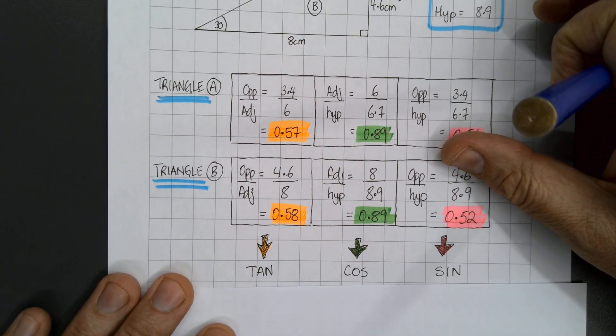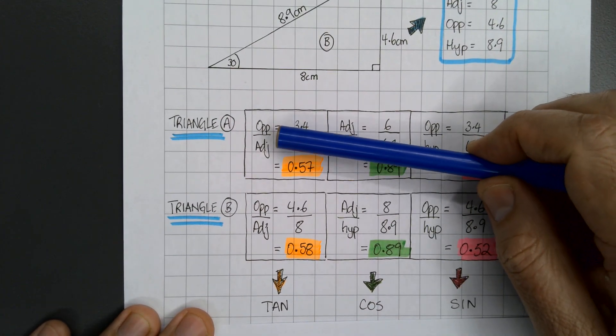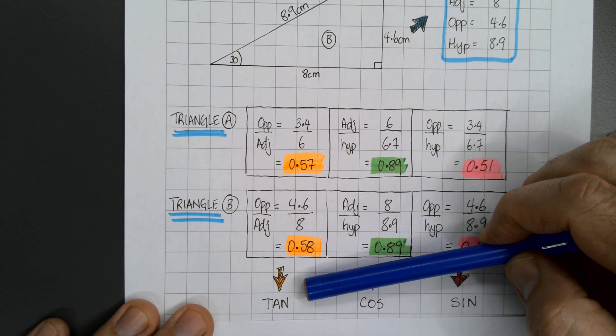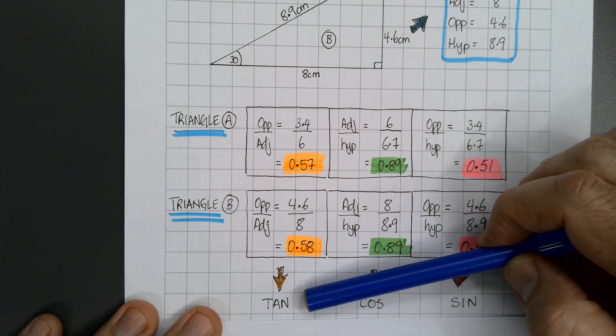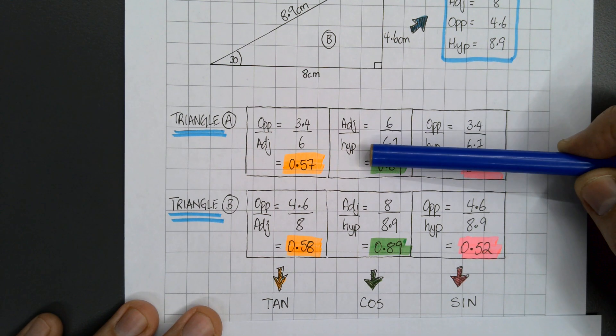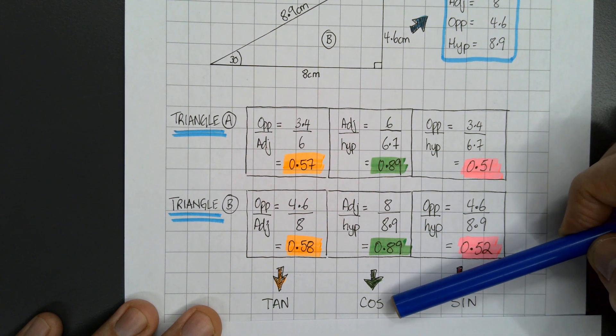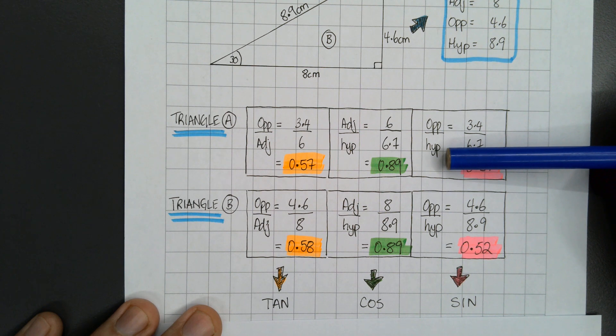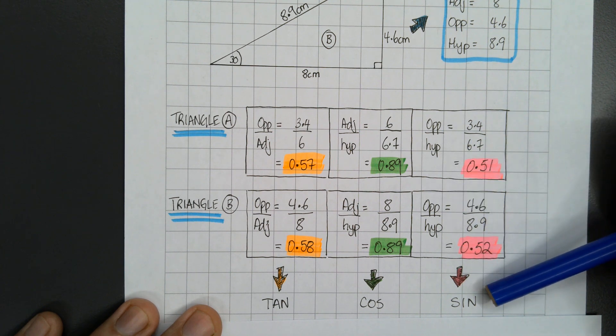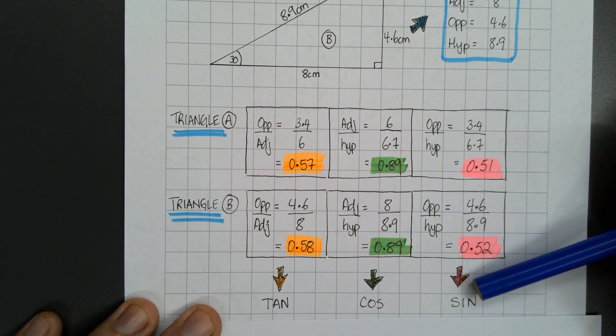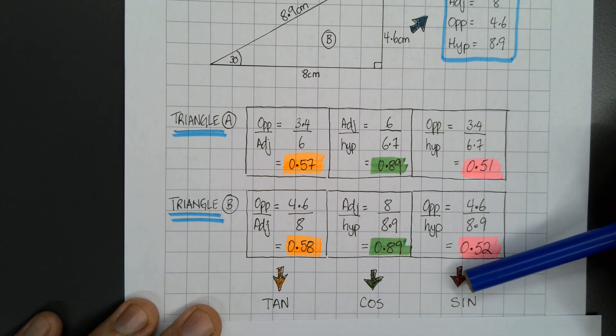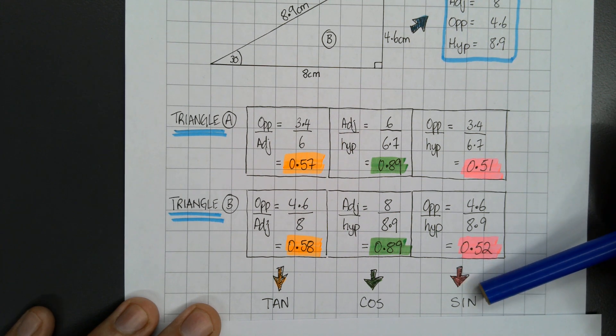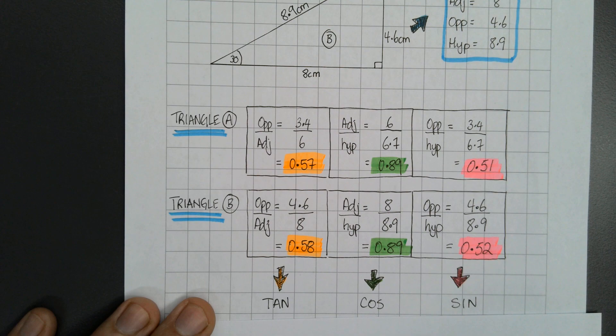We then give these a name. If I get the opposite divided by adjacent, we've called that the tangent or tan. If we get the adjacent over the hypotenuse, we call that the cosine, or we shorten it to cos. If we get the opposite over the hypotenuse, we call it the sine (S-I-N-E), but we simplify to S-I-N. It's not sin, it's sine.